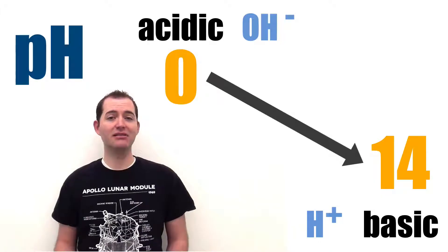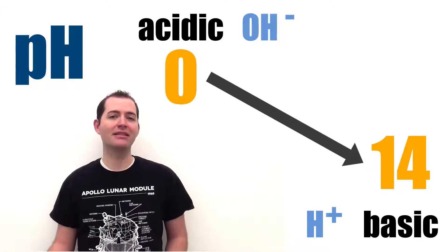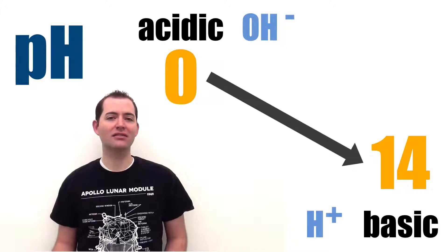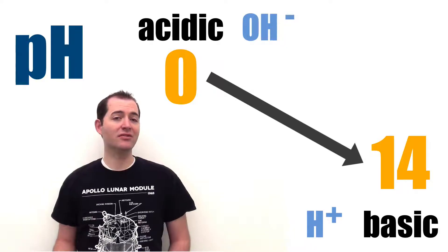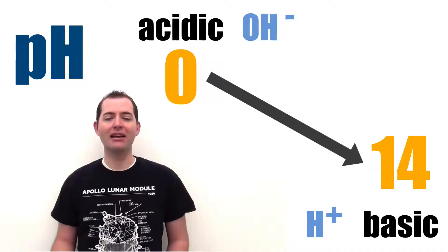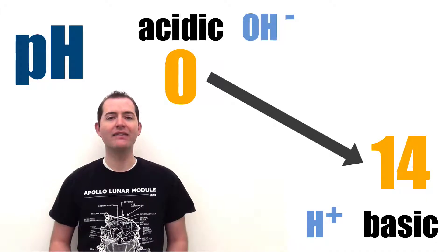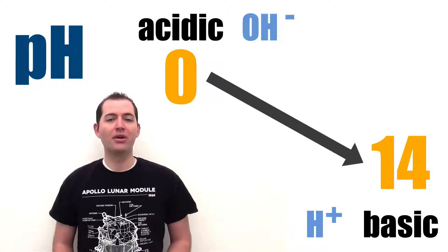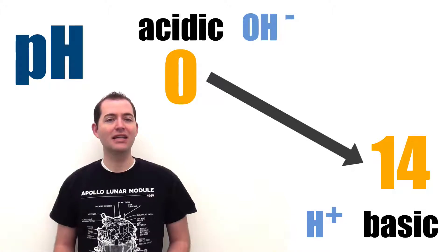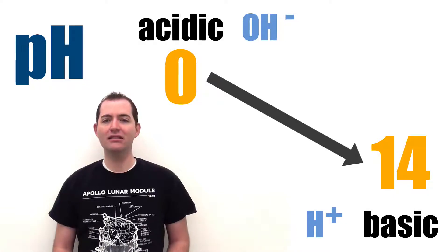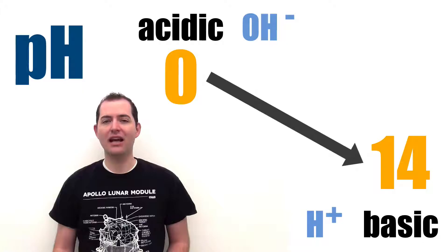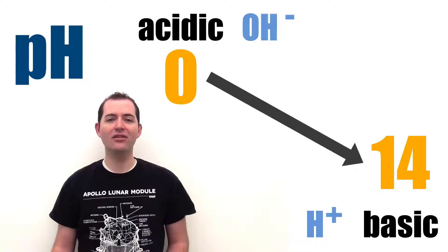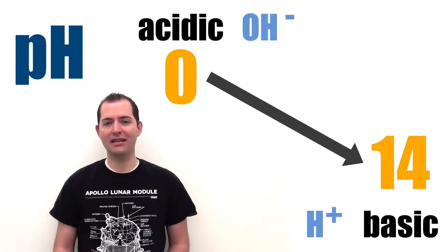pH numbers from 0 to 7 represent an acid and have an excess of hydroxide ions. pH numbers from 0 to 14 represent a basic solution and have an excess of hydrogen ions. Pure water has an equilibrium of hydrogen ions and hydroxide ions and has a value of 7 on the pH scale.